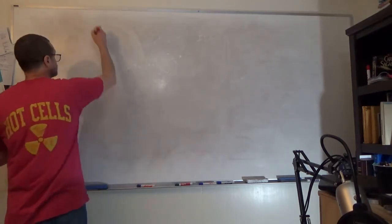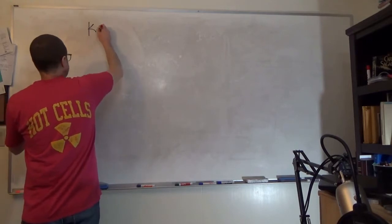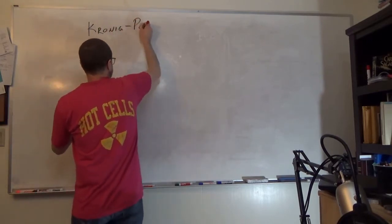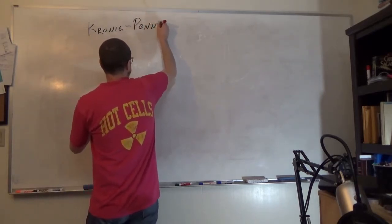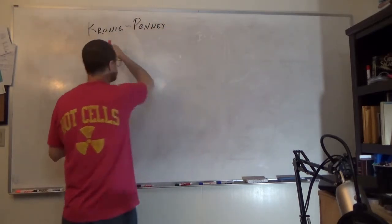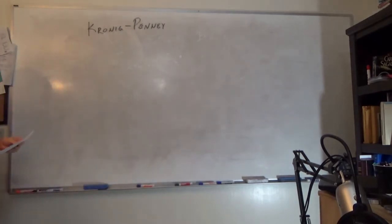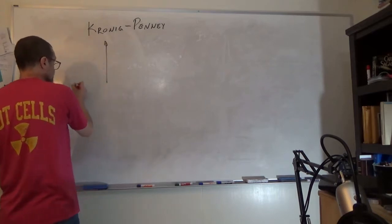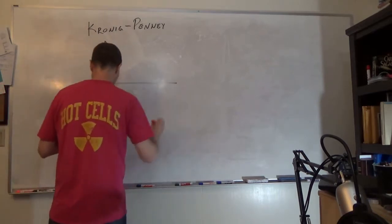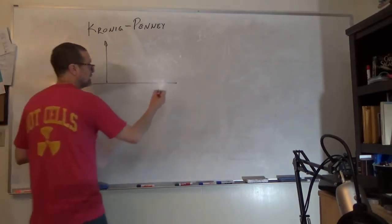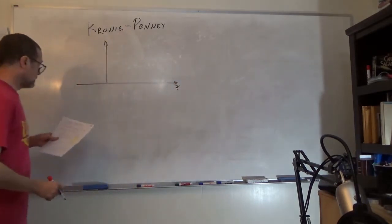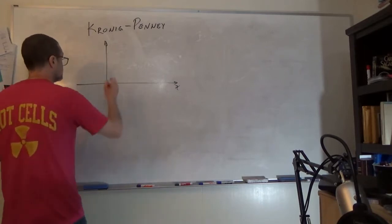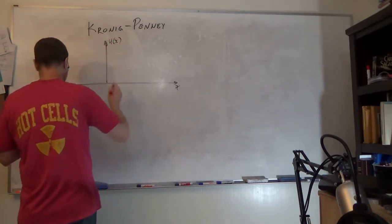So, let's get into it now. This is the Kronig-Penney model. The basic concept is we're going to create a potential field. This is going to be, again, a one-dimensional model. In our one-dimensional model, we're going to have a potential, mu of x.